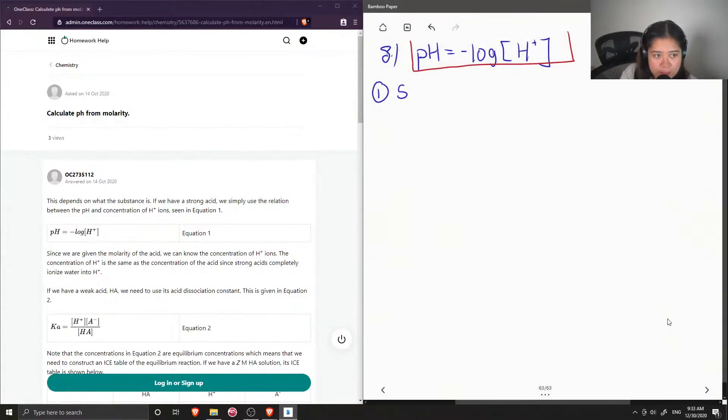In the first instance, we can have a strong acid which completely dissociates into their protons or into their ions. If we know that strong acids completely dissociate into their ions...